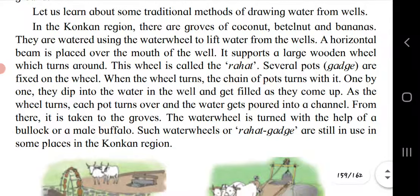Let us learn about some traditional methods of drawing water from wells. In the Konkan region there are groves of coconut, betel nut and banana, watered using a water wheel called the Rahat. A horizontal beam is placed over the mouth of the well and supports a large wooden wheel. Several pods are fixed on the wheel; when it turns, the pods dip into the water, fill up, and pour water into a canal which takes it to the groves. The water wheel is turned with the help of a bullock or a male buffalo, and such Rahat wheels are still in use in some places in the Konkan region.